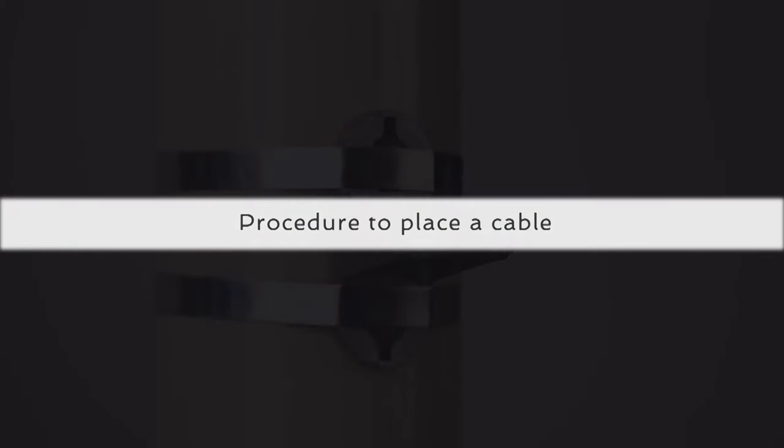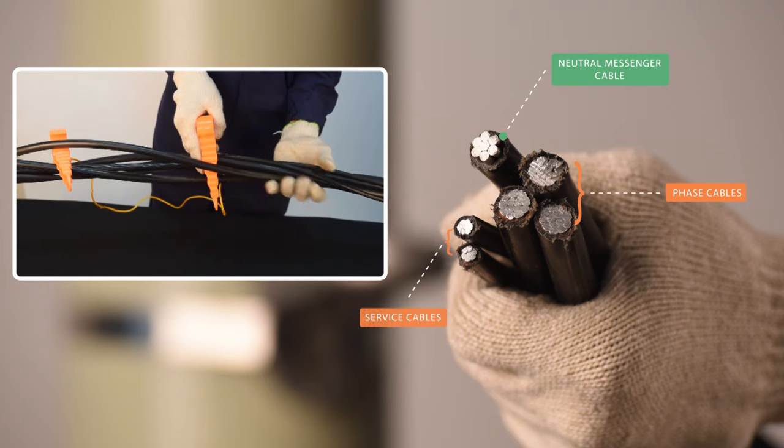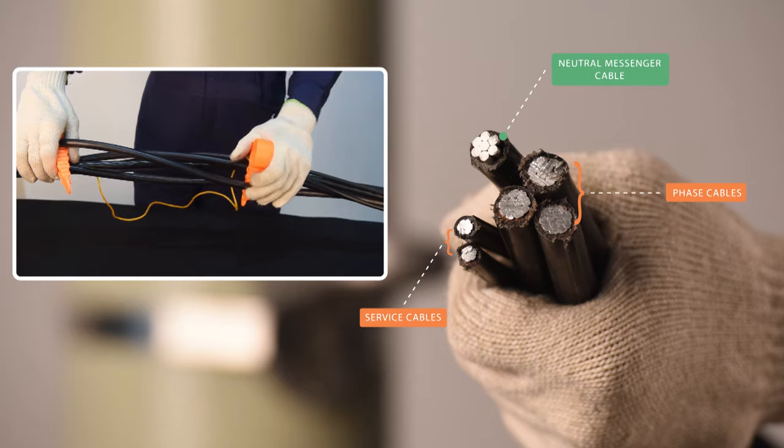Let us now understand the procedure to place a cable. Identify the neutral messenger cable and separate it from the other phase cables using a phase separator.